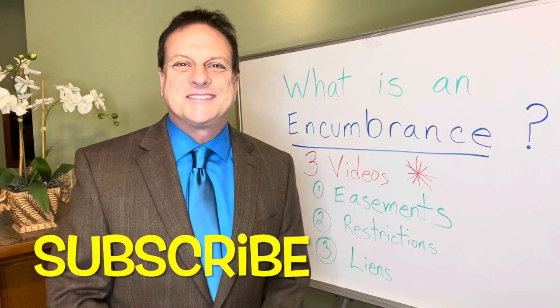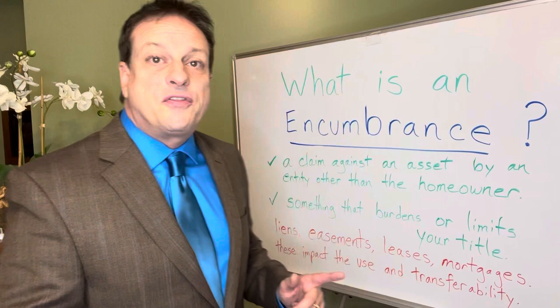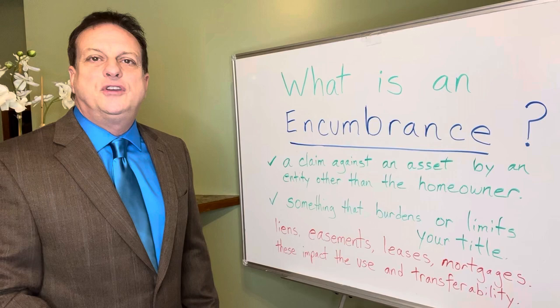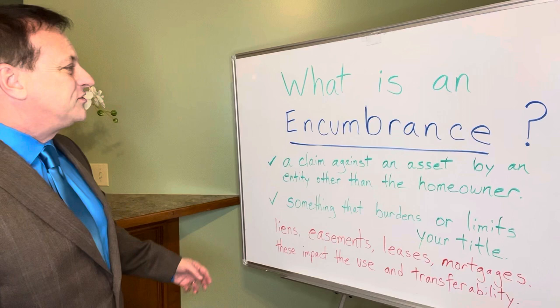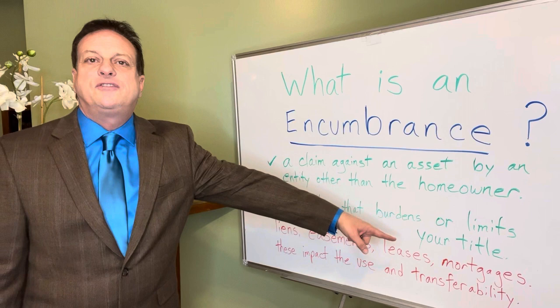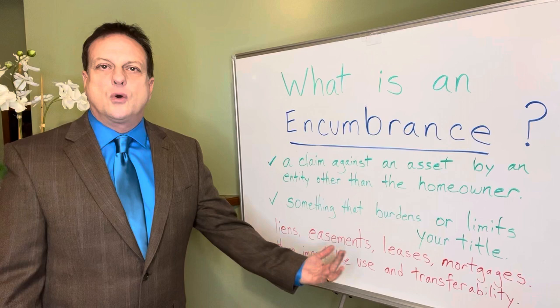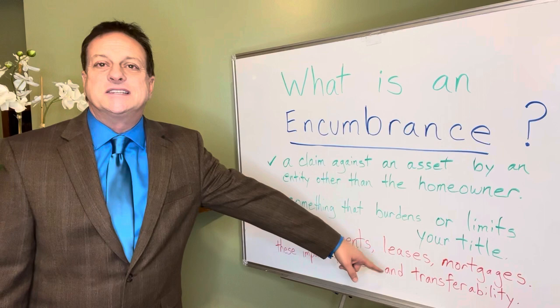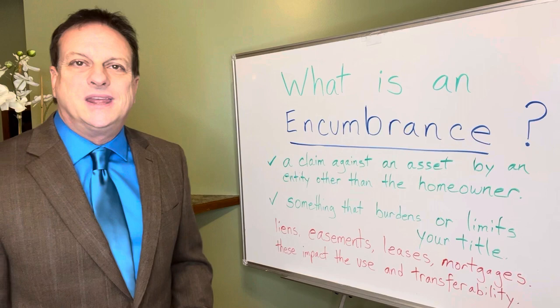What is an encumbrance? I want you to screenshot this slide. An encumbrance is a claim against an asset by an entity other than the homeowner. It's something that burdens or limits your title — that's what I want you to remember. Some examples would be liens, easements, leases, and mortgages. These impact the use and the transferability of the property.